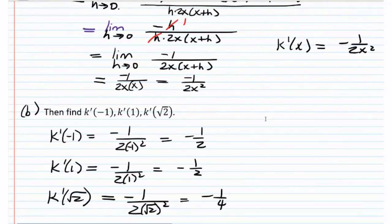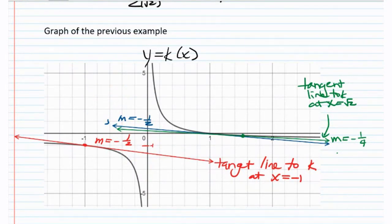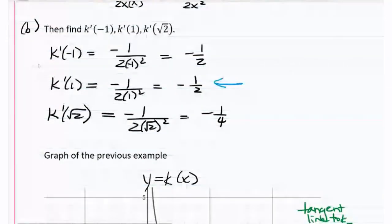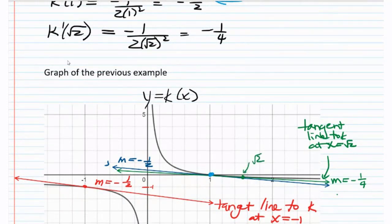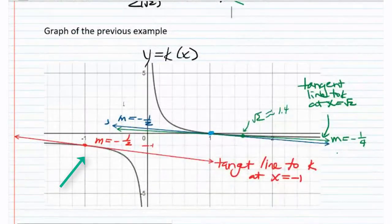So these are the slopes of that function at those given values. I have here a graph — I graphed k of x on Desmos. The tangent line in blue is going through the point on the graph where x is 1, and we have a slope of negative 1 half. The tangent line in green is going through square root of 2, which is about 1.4, between 1 and 2, and we see a slope of negative 1 fourth. Both of these tangent lines are decreasing but very slowly — they're very shallow, so they have a small negative slope. And red there is negative 1 half as well. So that's all for today. I hope you found this video useful — if you did, please remember to like it.